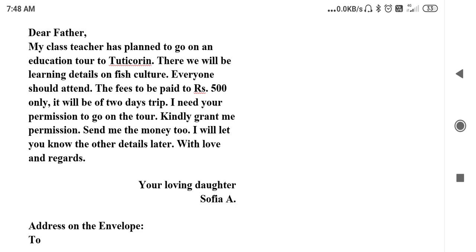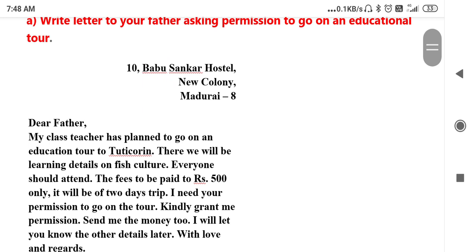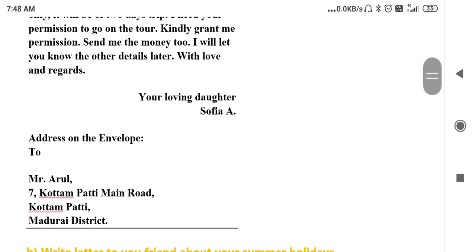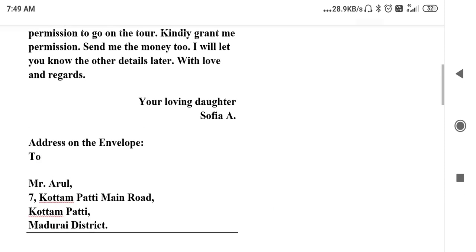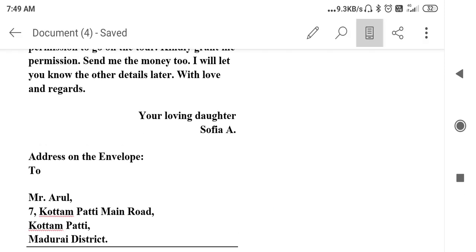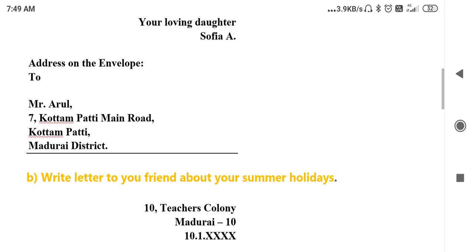With love and regards, your loving daughter Sophia. So here Sophia — a girl — is writing the letter. Next, for the address on the envelope, you write the father's address. Sophia's father's address is Mr. Arul, Kottampatti Main Road, Kottampatti, Madurai District. Instead of writing Sophia's name, you can also write your own name and house address here, though it is not compulsory.